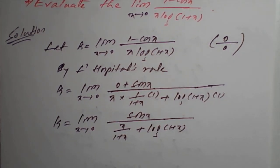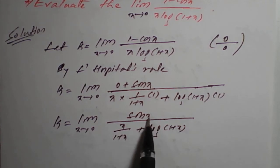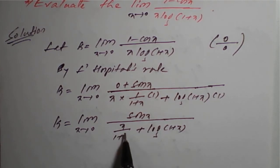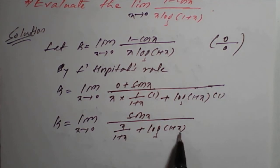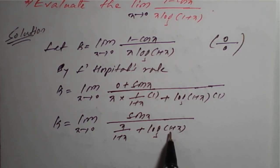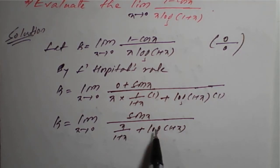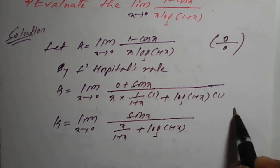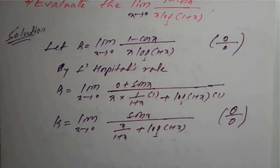We check again by applying x equals 0: sin 0 is 0 in the numerator. In the denominator, 0 divided by 1 plus 0 is 0, and log of 1 is also 0, so we get 0 plus 0 equals 0. So this is again a 0 by 0 form.